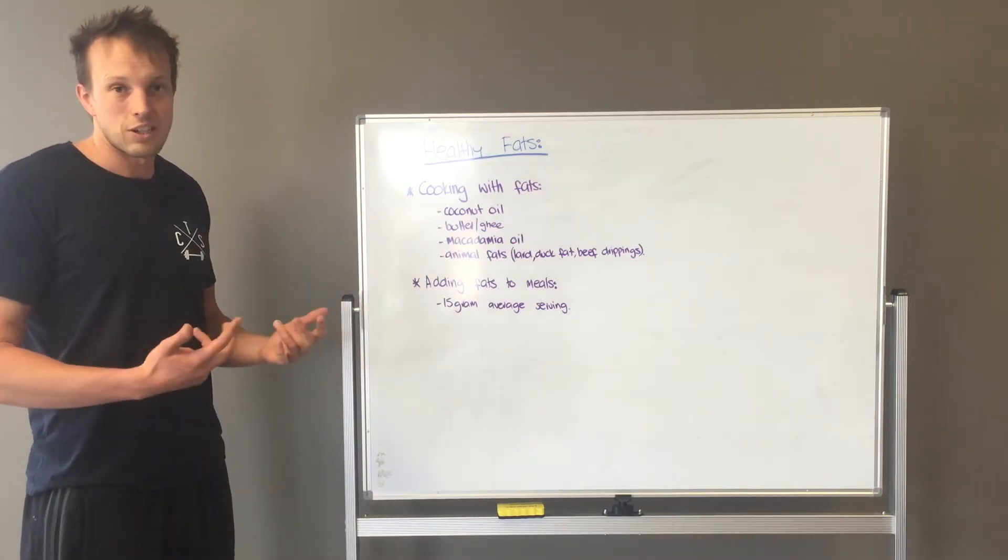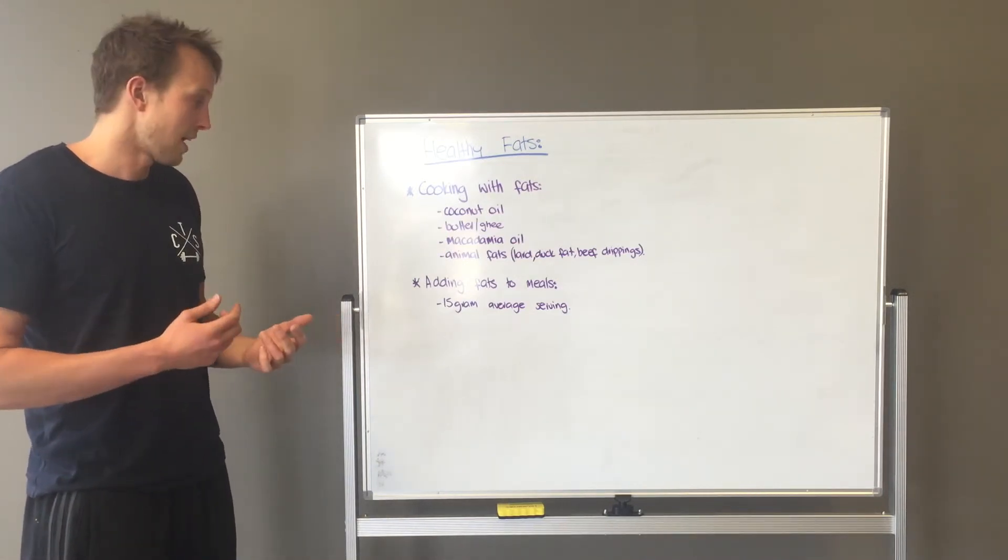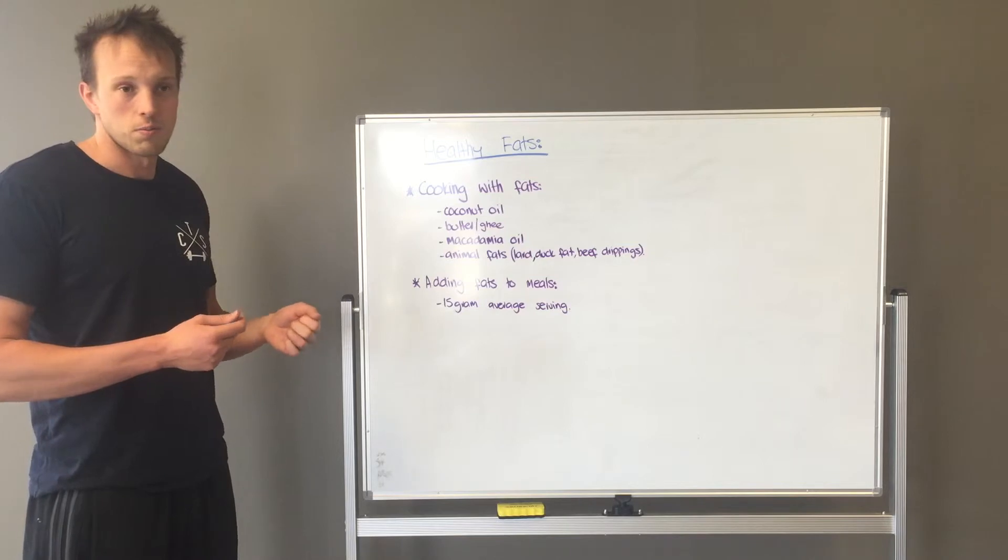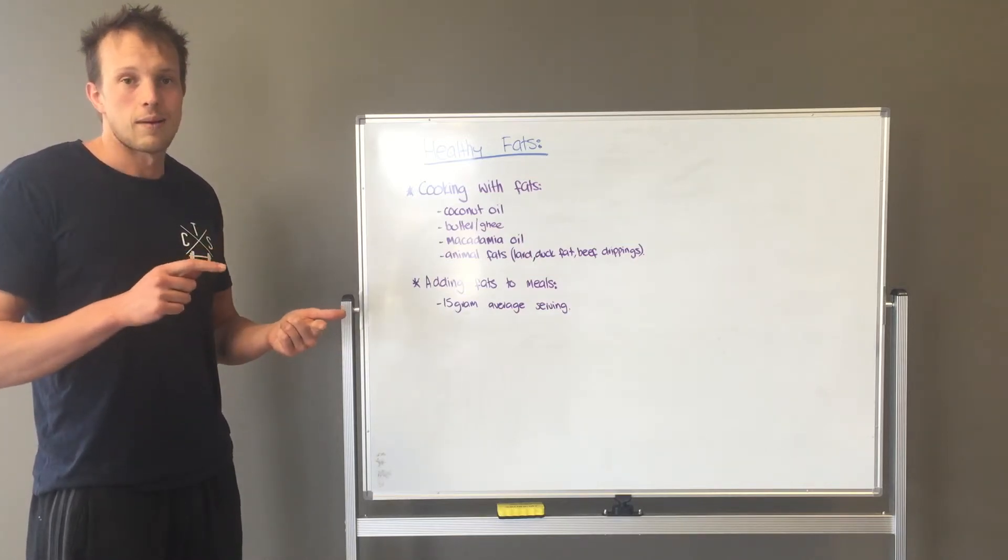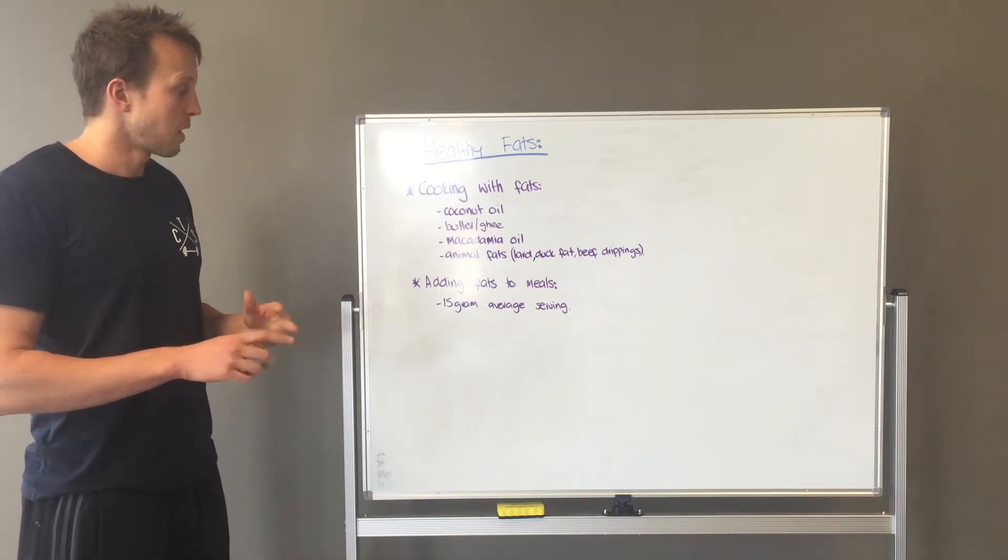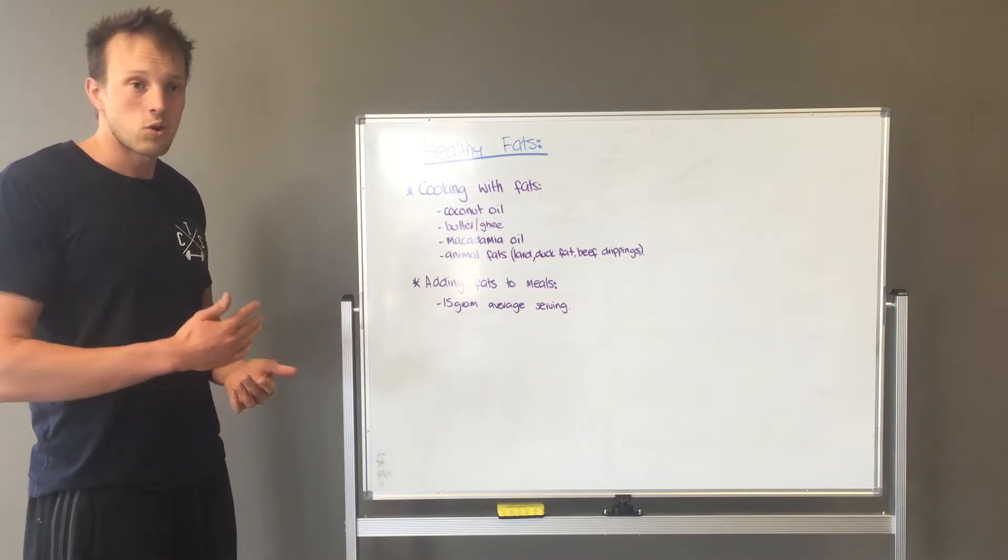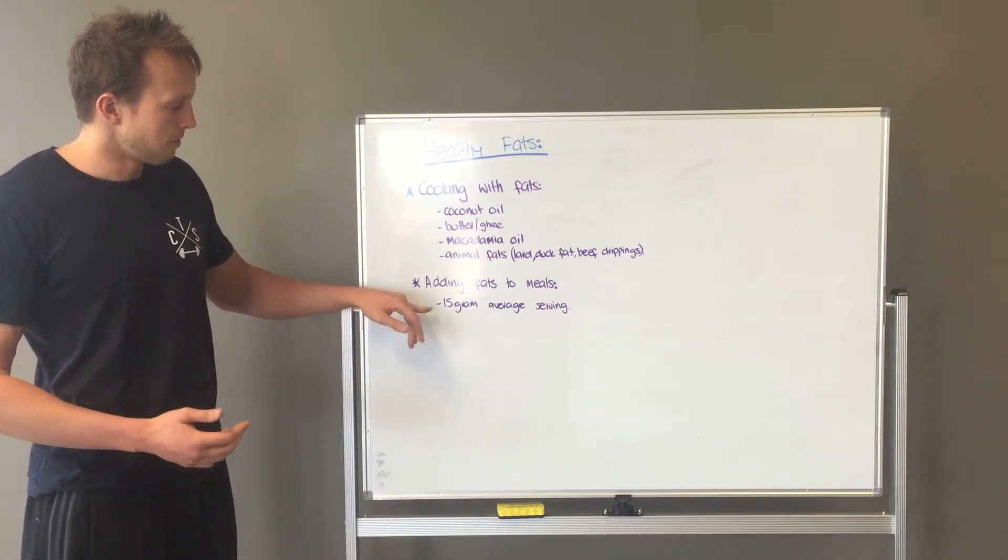If you're having some lean chicken, there's no fats there. So we can add some olive oil to a salad, some avocado or some nuts. So really for most people, the amount of actual fats you want, the macronutrient fat is about 15 grams.